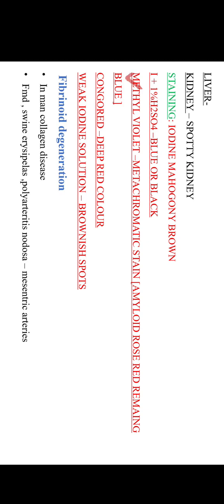The affected kidney shows a spotty appearance. In amyloid infiltration, the staining topic is very important. With iodine, it stains mahogany brown. With iodine and 1% H2SO4, it stains blue or black. With methyl violet, it stains metachromatic — the amyloid stains rose red and the remaining tissue is blue. The most important stain for amyloid is Congo red, which gives a deep red color; the route of administration is IV. Weak iodine solution shows brownish spots.